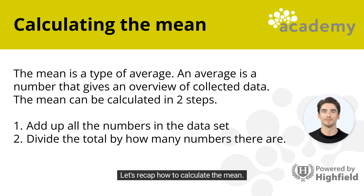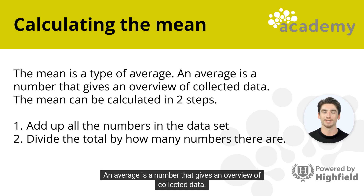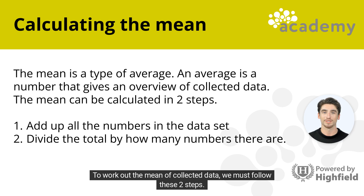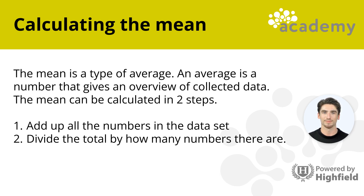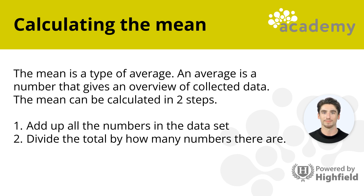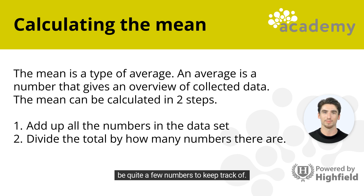Let's recap how to calculate the mean. The mean is a type of average. An average is a number that gives an overview of collected data — in other words, an average summarizes the data collected. To work out the mean, follow two steps. Step 1: add up all the numbers in the data set. Step 2: divide the total by how many numbers there are. It is important to remember to add up the values carefully, as there can sometimes be quite a few numbers to keep track of.